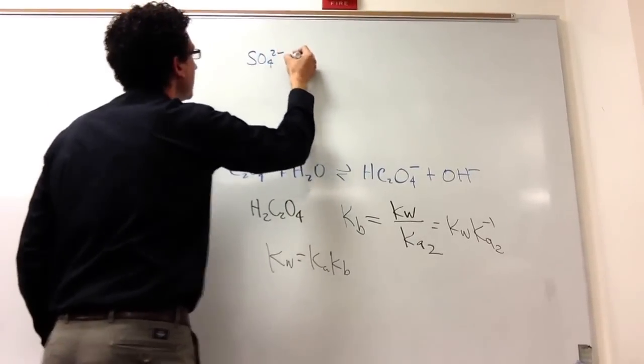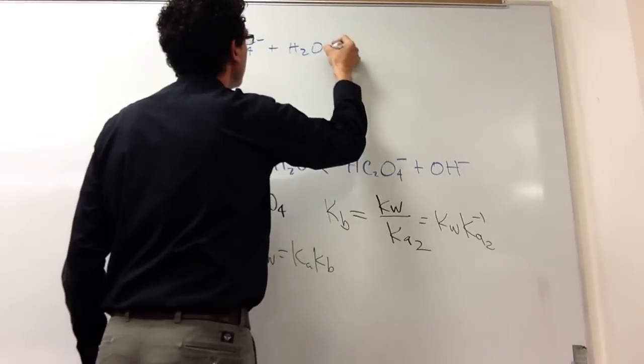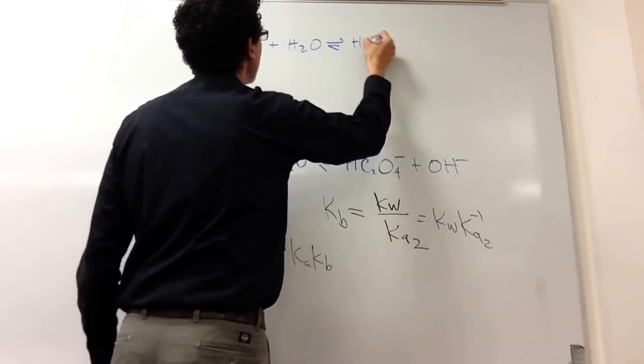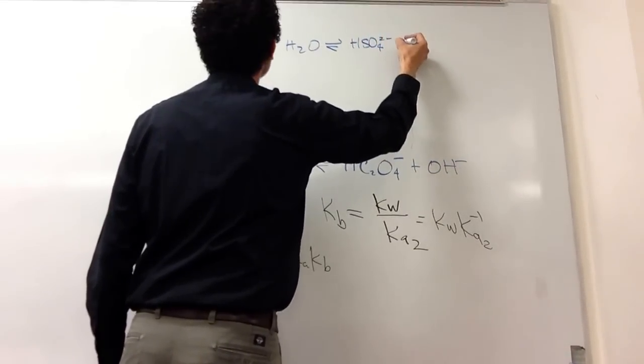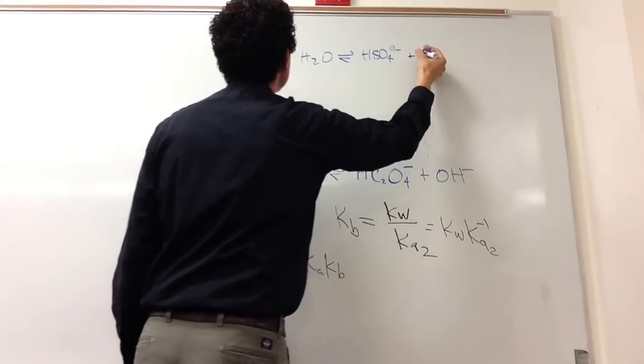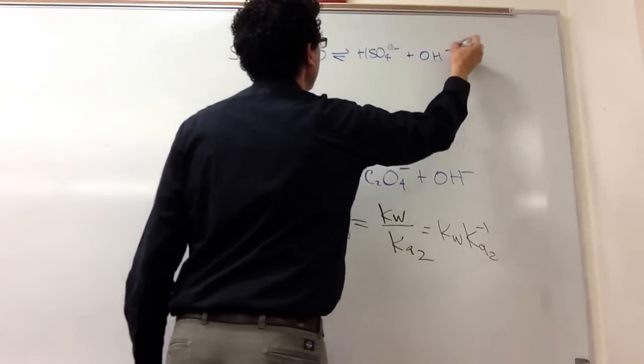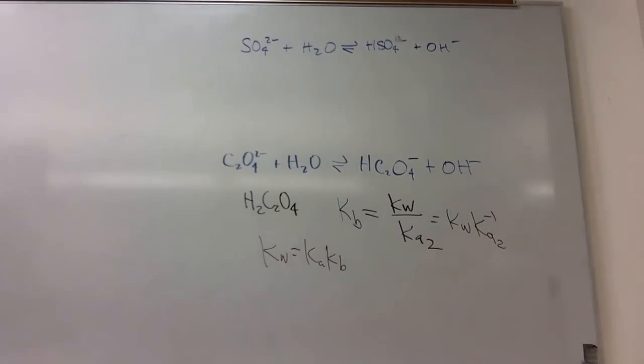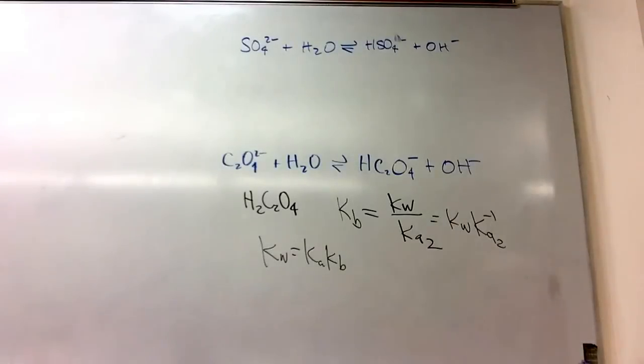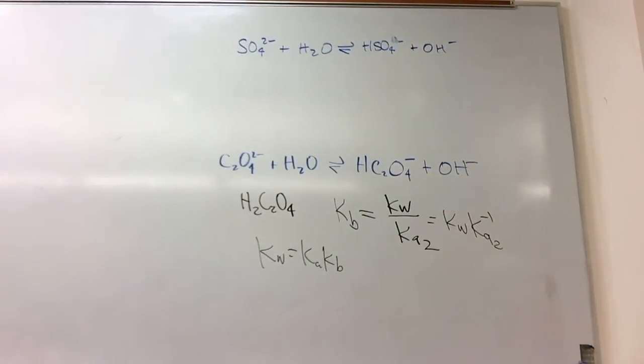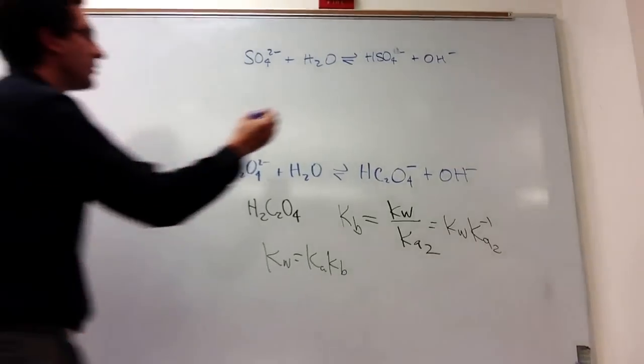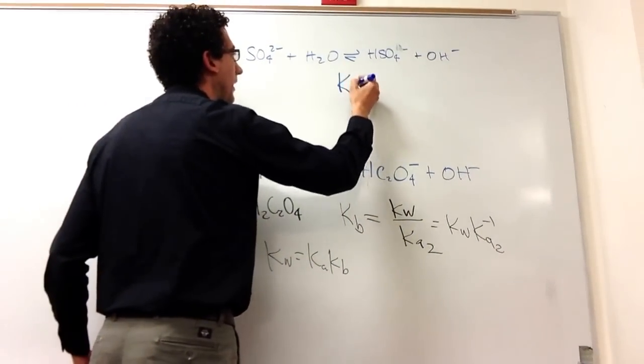SO4 2 minus plus H2O goes to HSO4 minus, oh, minus one, plus OH minus. Okay, now we're looking at it again. It's not the reverse of an acid reaction. It's a base reaction. A base is the base plus water goes to whatever, plus OH minus. This is a general reaction for a base, so I know it's going to be a KB. KB equals something.